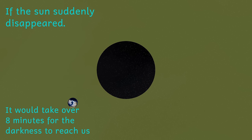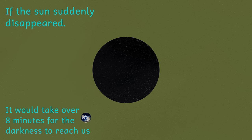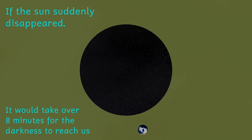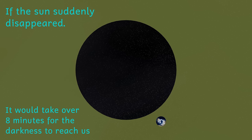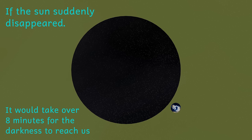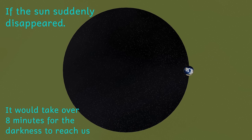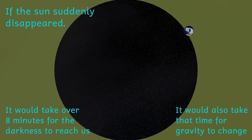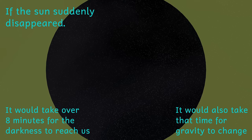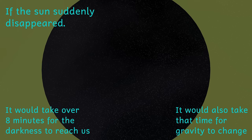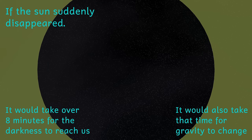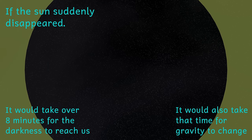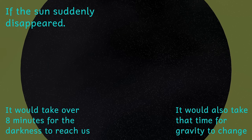Objects and particles with mass are slowed down by that mass, and so must travel at speeds slower than the speed of light. Massless things such as electromagnetic waves, of which visible light is just one type, are not slowed down by any mass, and so are able to travel at this ultimate speed.